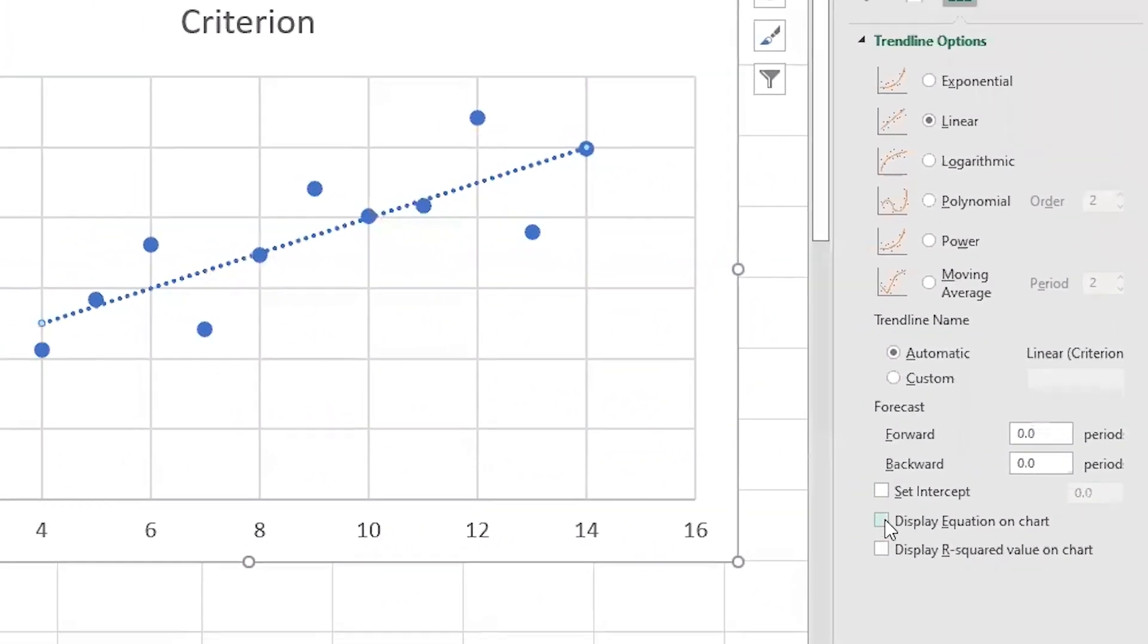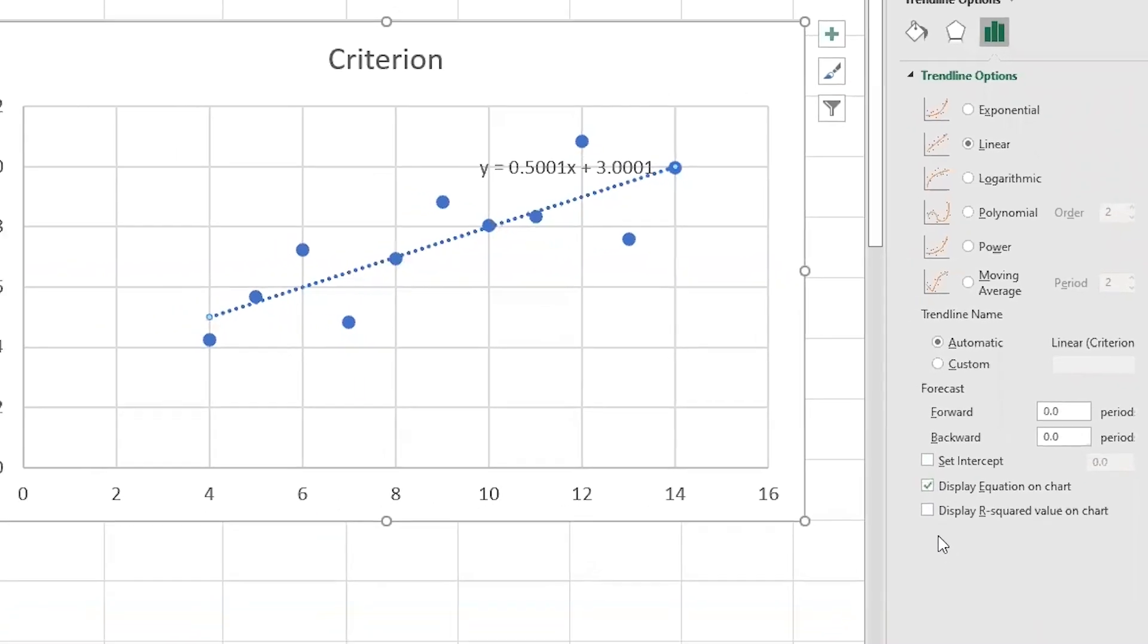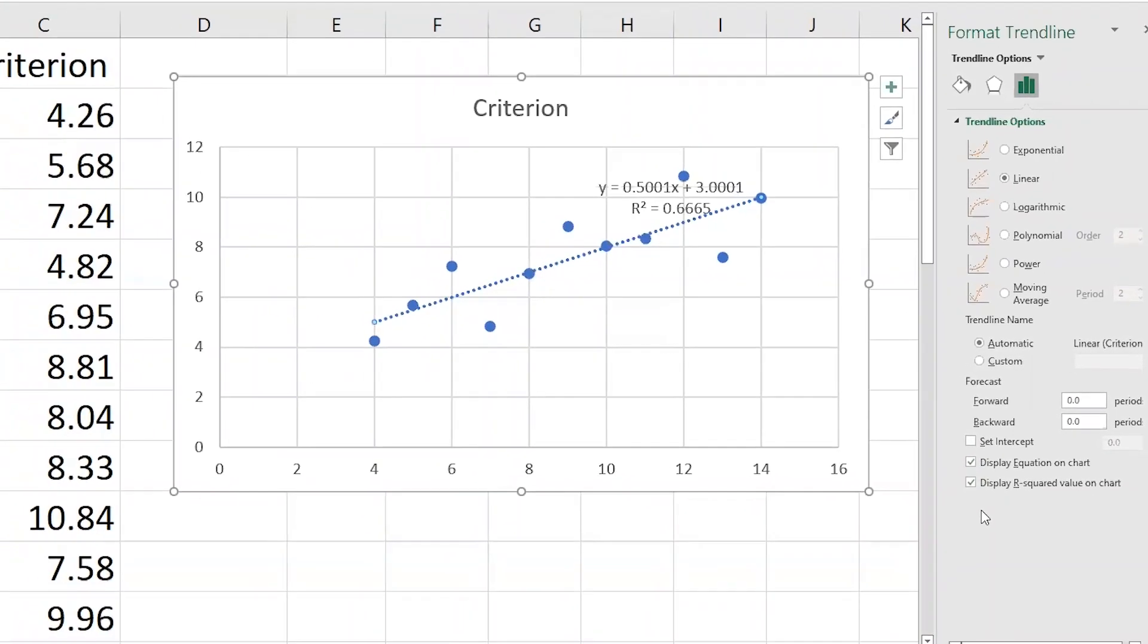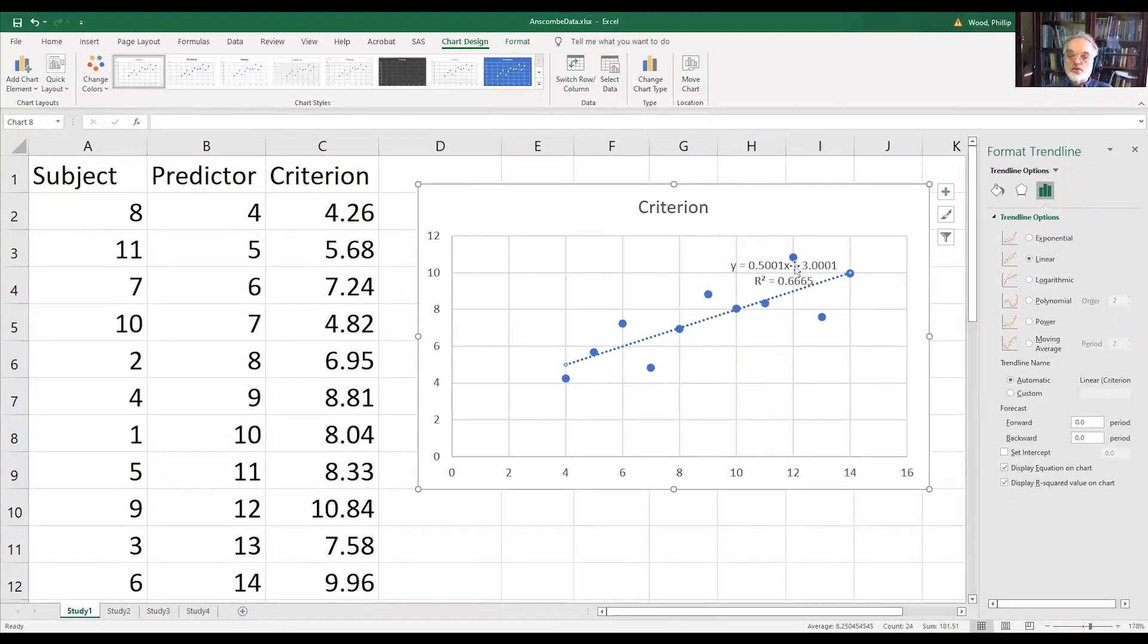And down here, we will select the display of the equation on the chart and display the R square value, that is the square of the correlation coefficient.